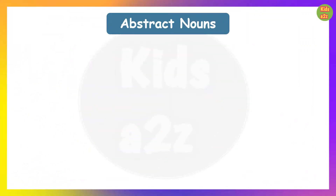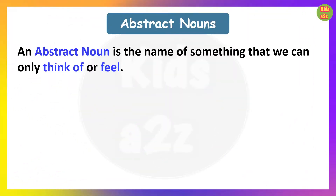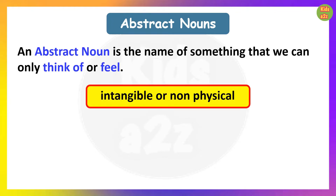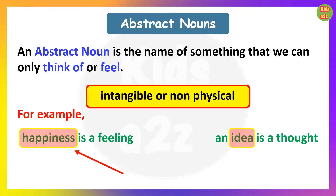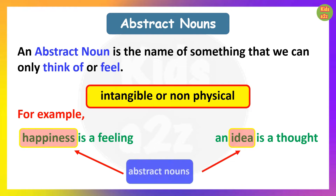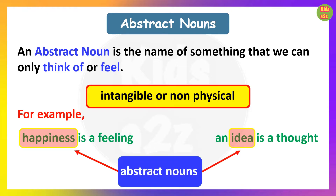So, what is an abstract noun? An abstract noun is the name of something that we can only think of or feel. Abstract nouns are intangible or non-physical. For example, happiness is a feeling. An idea is a thought. Happiness and idea are abstract nouns.